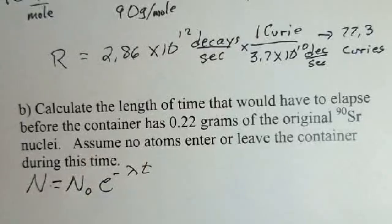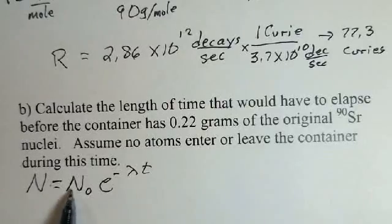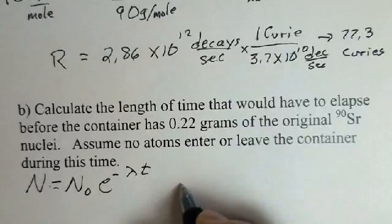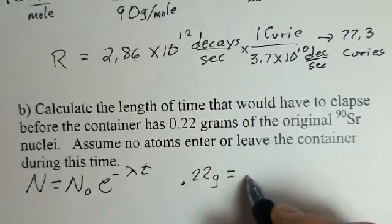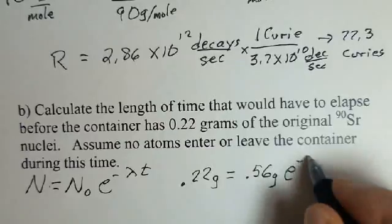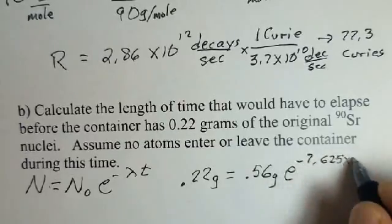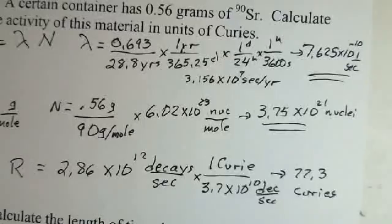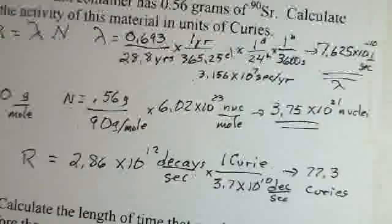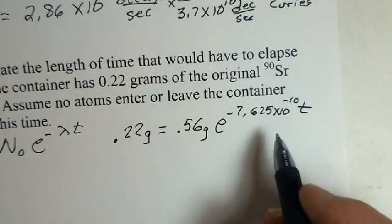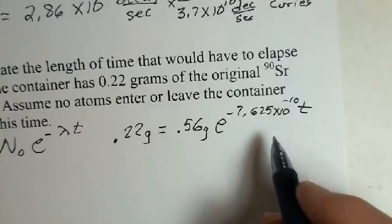And this can be the number of particles, or it can be the number of grams, or it can be the activity. They're just conversion factors to go between those values. So we can work with grams here. And we want 0.22 grams later. We're starting with the 0.56 grams. And we have e to the minus 7.625 times 10 to the minus 10 and we have an unknown time. So we're taking advantage of the work from part A, our lambda value, 7.625 times 10 to the minus 10, and using that down here. So we have our unknown under the control of an exponential. We have to do a few simplifications. First, we would divide by the 0.56.